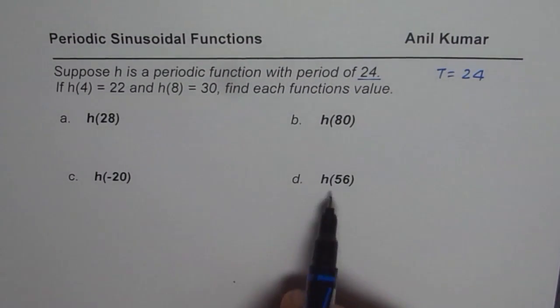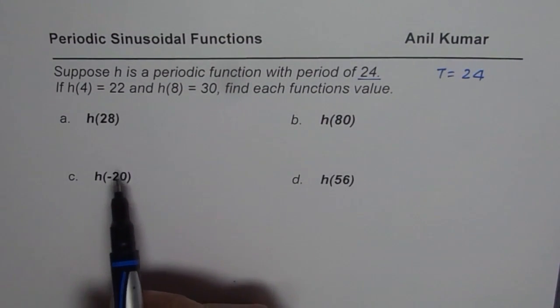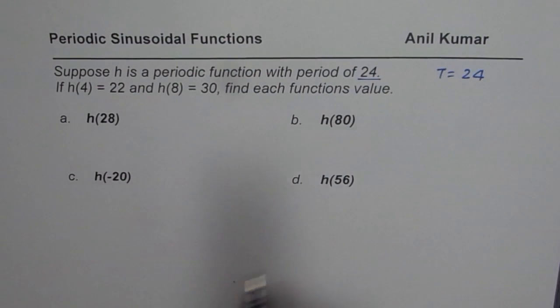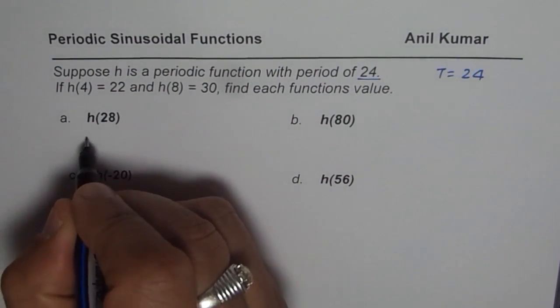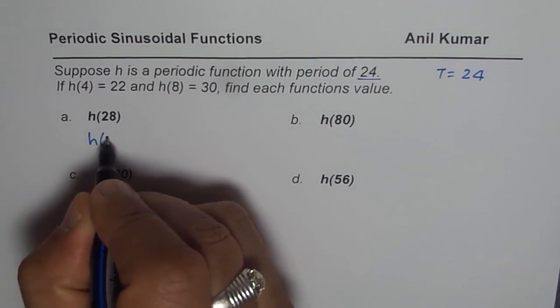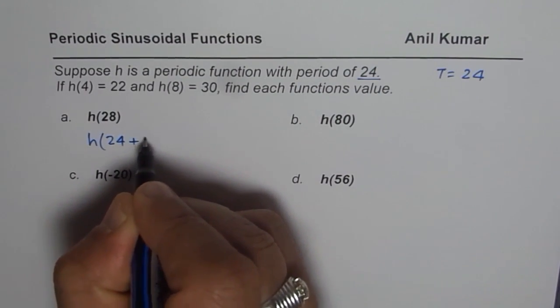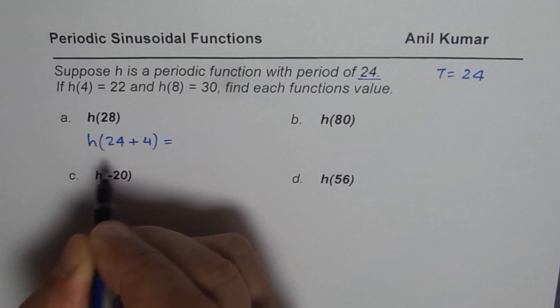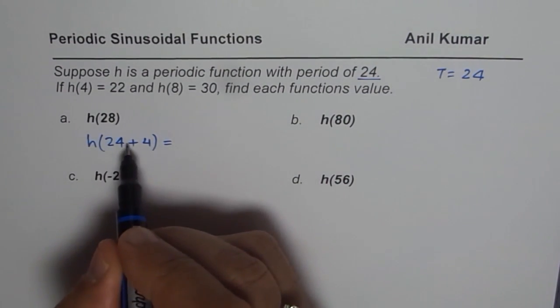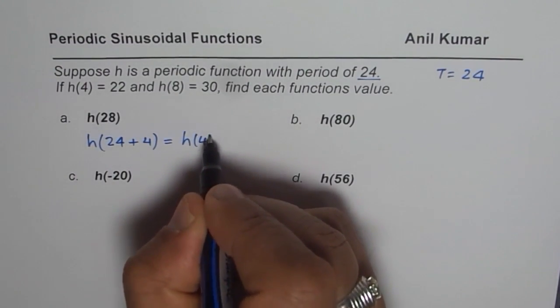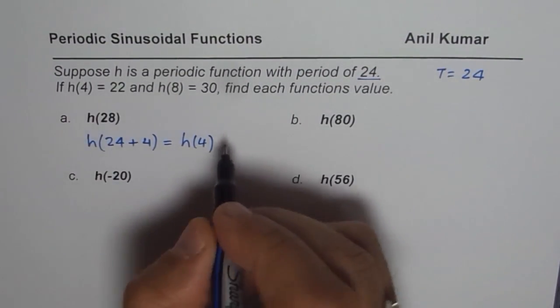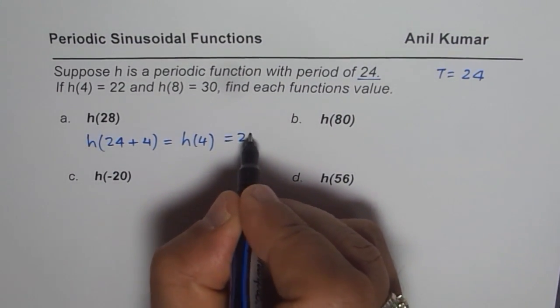So to find any one of these values, we have to write that number in terms of 24 plus or minus something. So H(28) could be written as one full cycle of 24 plus 4. Since the function is periodic, after every 24, the numbers will repeat. So we'll get the value as H(4) and H(4) is given to us as 22. So we get this answer as 22.